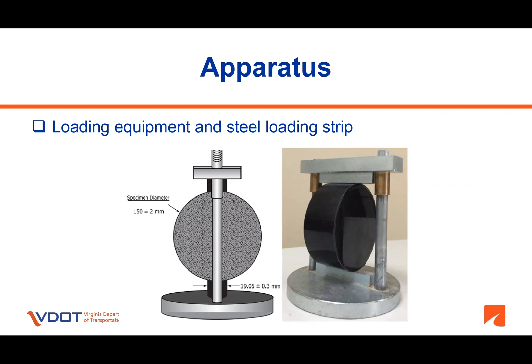One important note about the loading fixture is that VDOT SPEC 211 gives the option to use either 100 mm or 150 mm diameter specimens to perform the moisture damage test. However, VDOT BMD SPEC requires 150 mm diameter specimens to be tested for the IDT cracking test. So if you have a loading frame with an external loading strip like the one shown in this slide, then the loading strip will change depending on the specimen diameter you use. For example, if you would like to test a 150 mm diameter specimen, then the loading strip should be about 19.05 mm wide. Incorrect use of loading strip will result in incorrect test results.